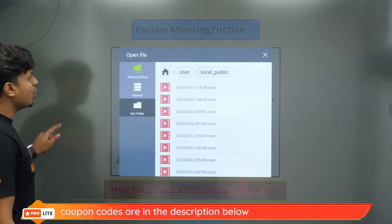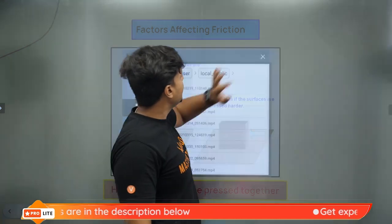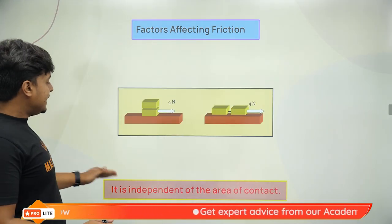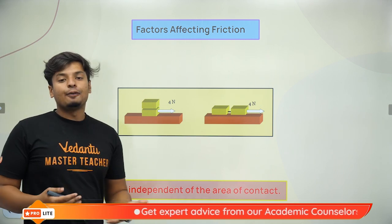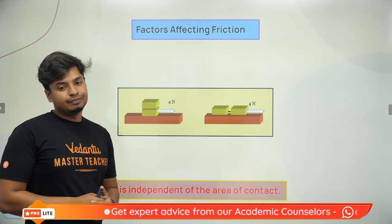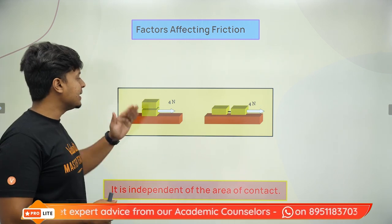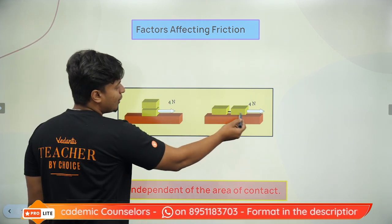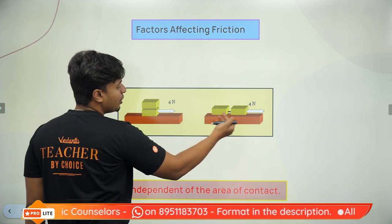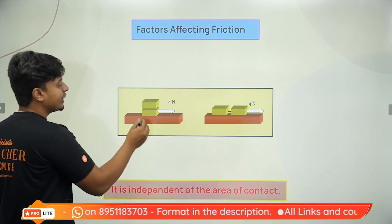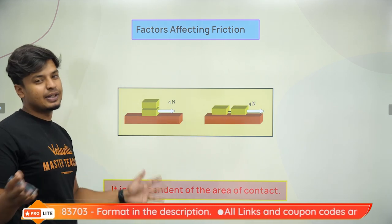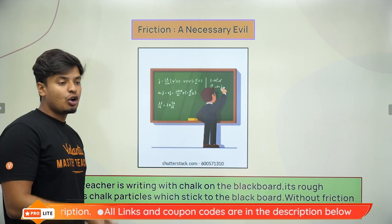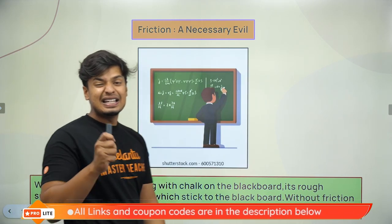Friction is independent of the area of contact. It doesn't matter how much surface area is touching — whether the area of contact is more or less, it doesn't affect friction. Friction is also called a necessary evil.